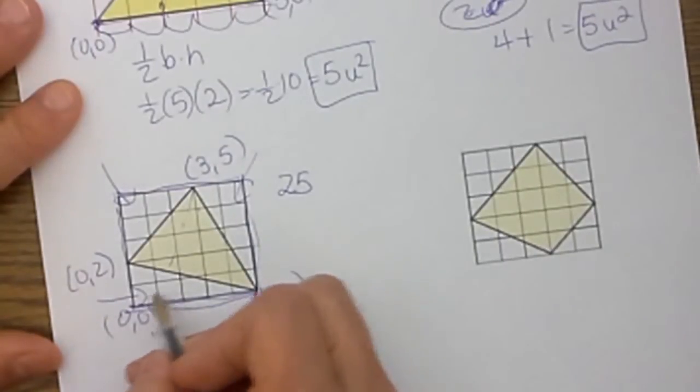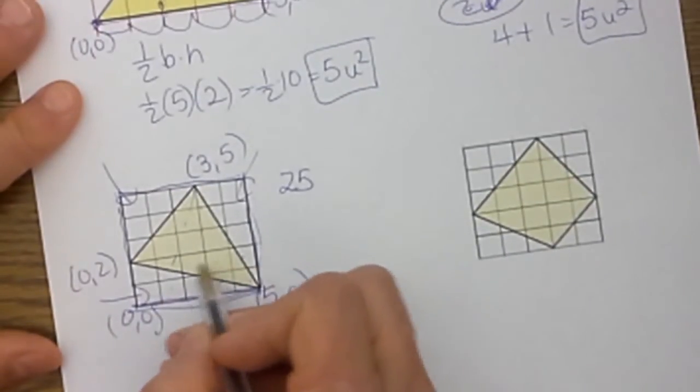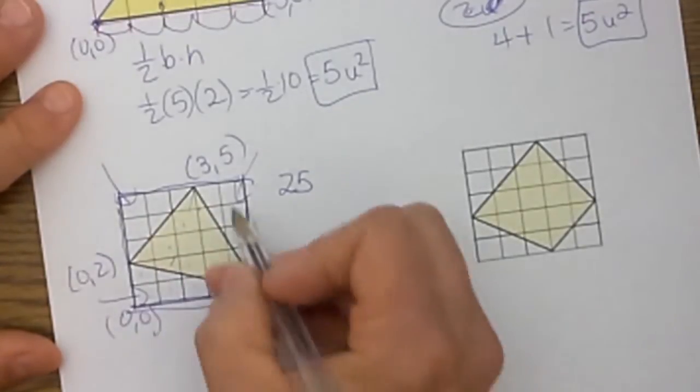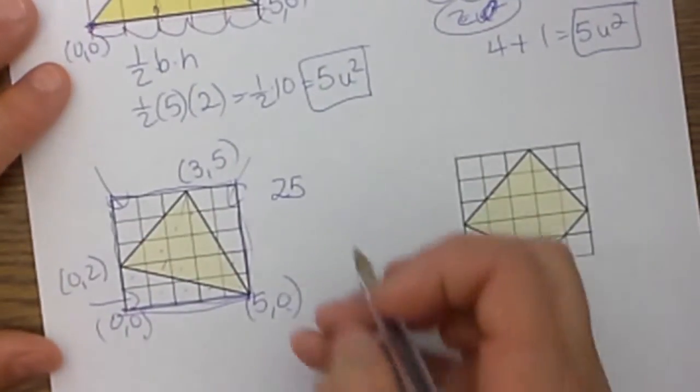You can even count it, you can count up to 25 and see there are 25 square units there.